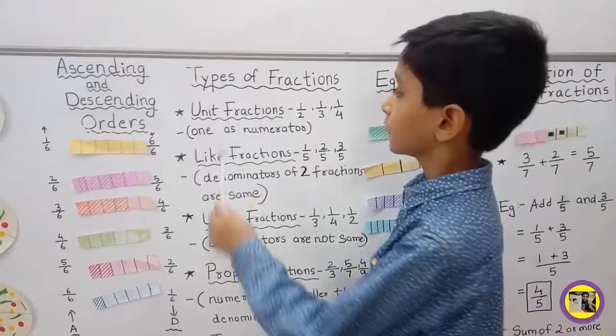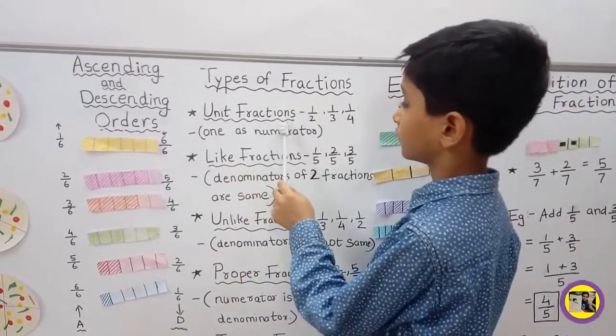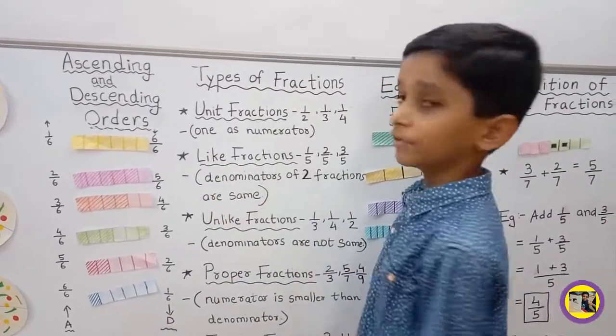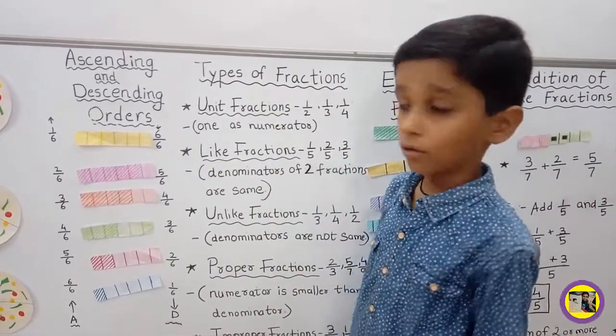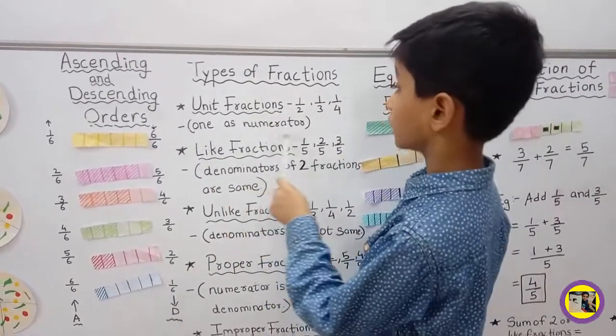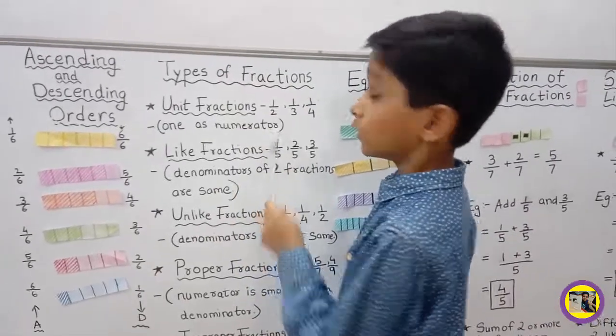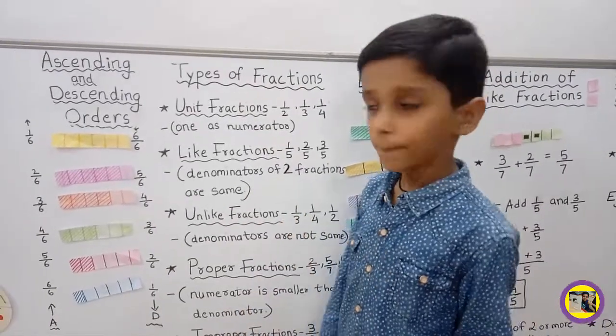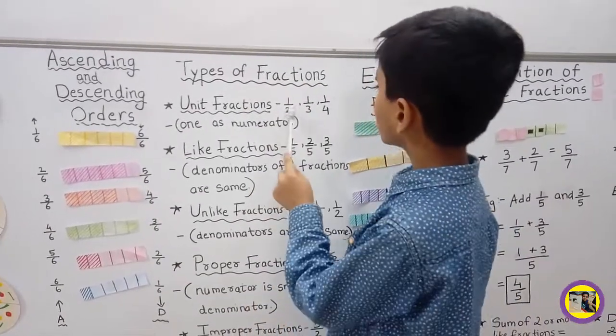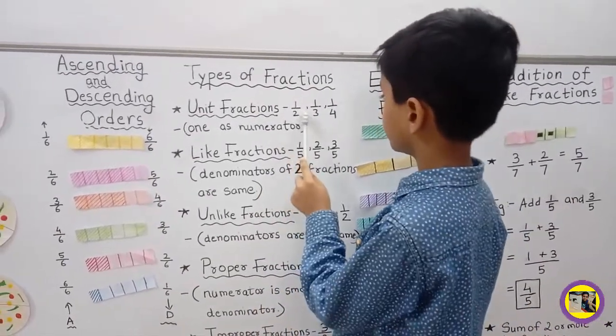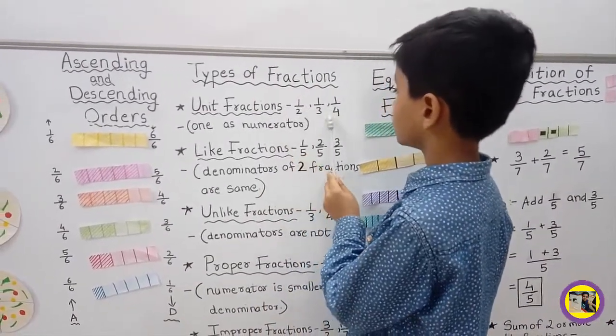Unit Fraction: Unit fractions have 1 as the numerator. For example, 1 upon 2, 1 upon 3, 1 upon 4.